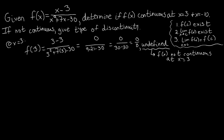Now we look at the limit to determine what type of discontinuity x=3 is. We have three kinds: a removable discontinuity, more commonly referred to as a hole; a jump discontinuity, where the graph makes a jump at that value; and an infinite discontinuity. Each of those three has a different requirement that the limit must satisfy in order to be classified as that type.